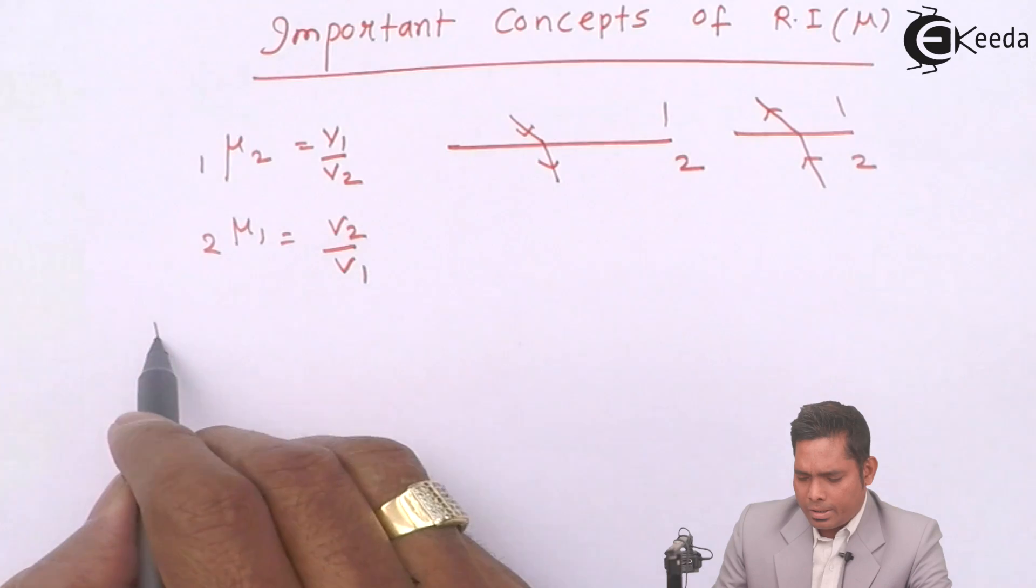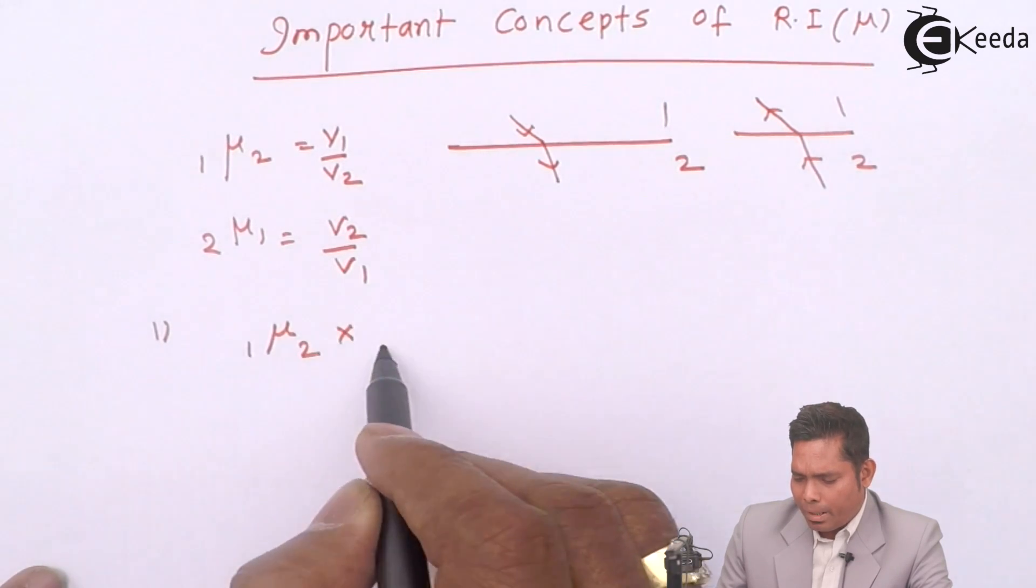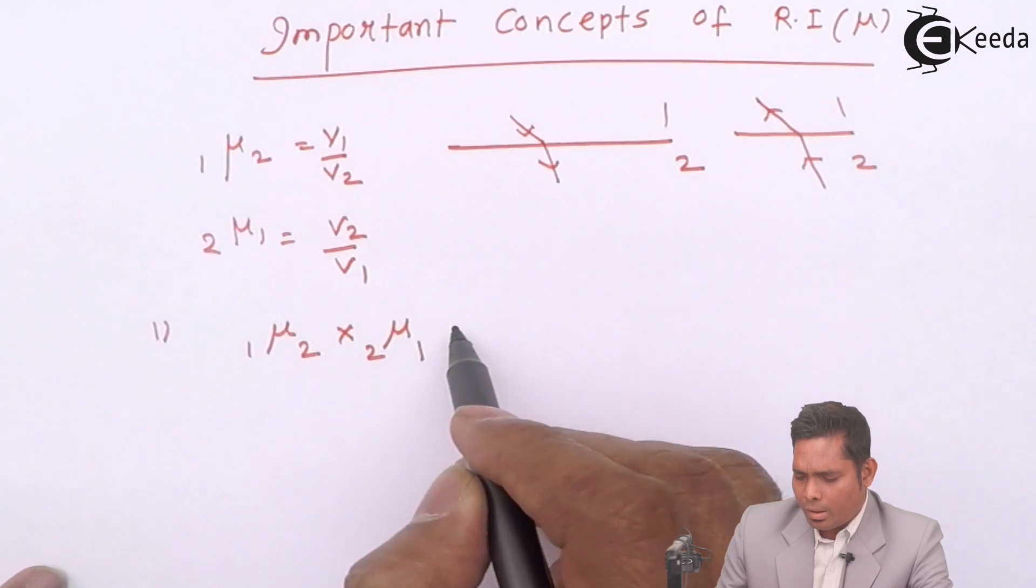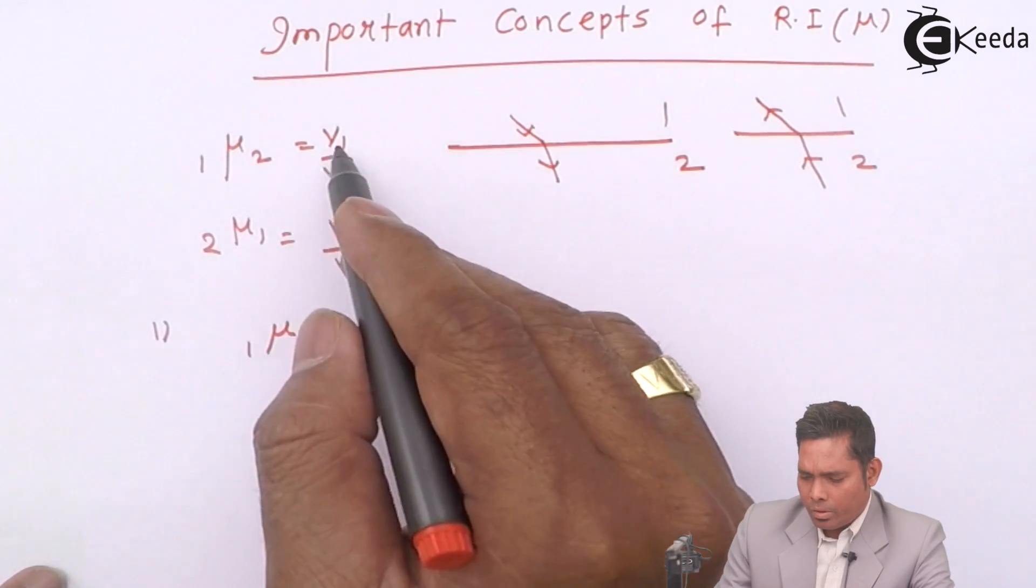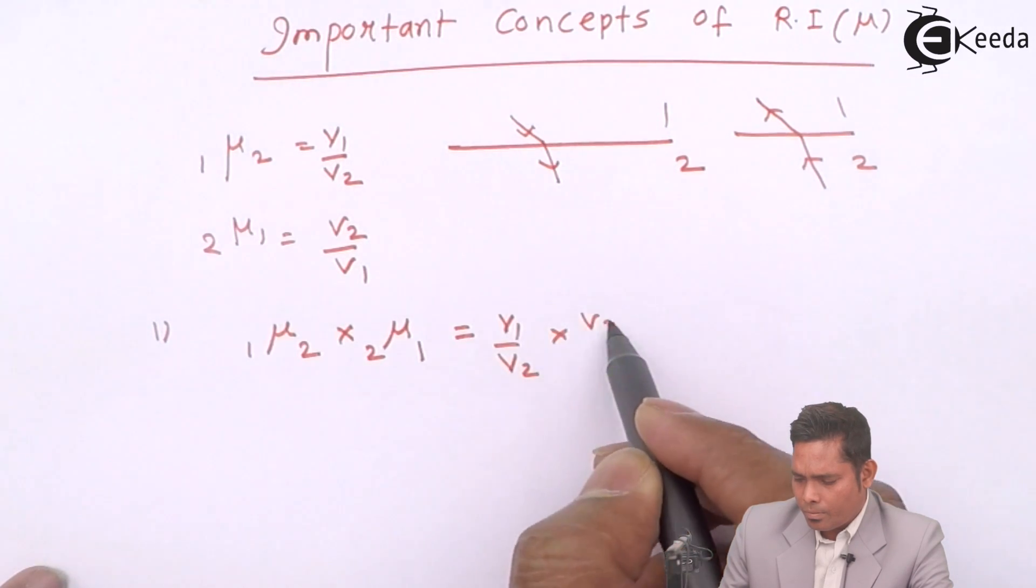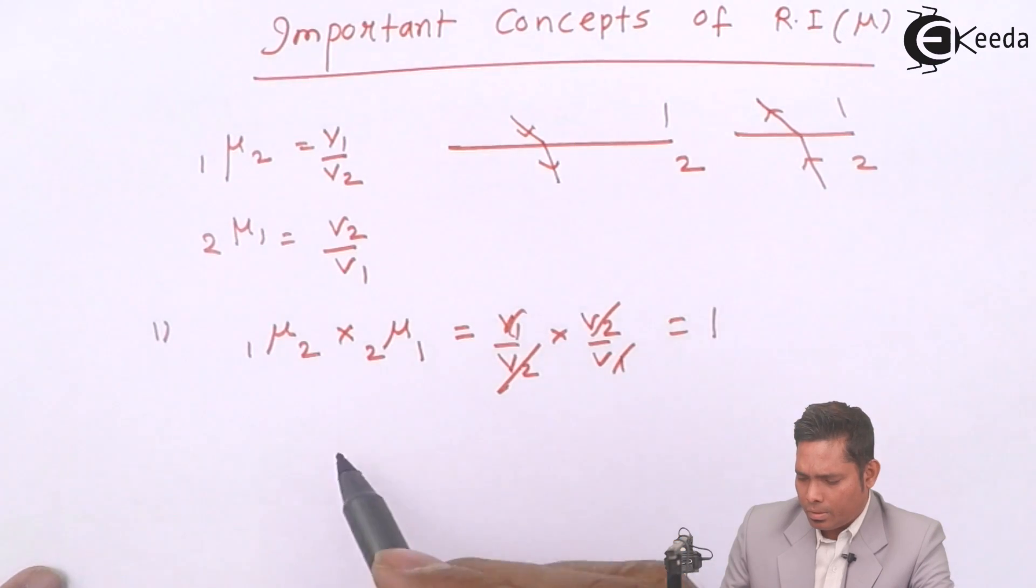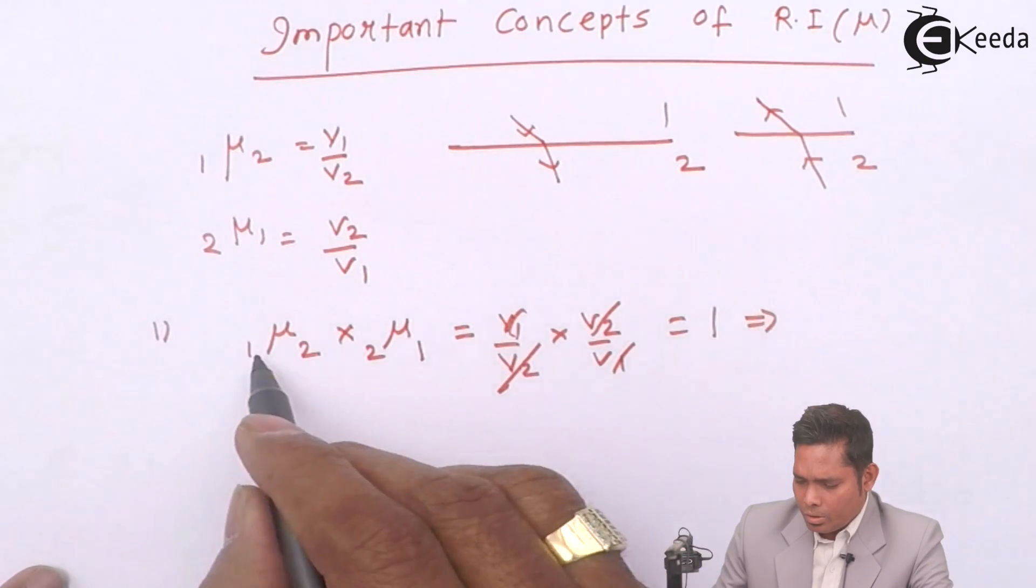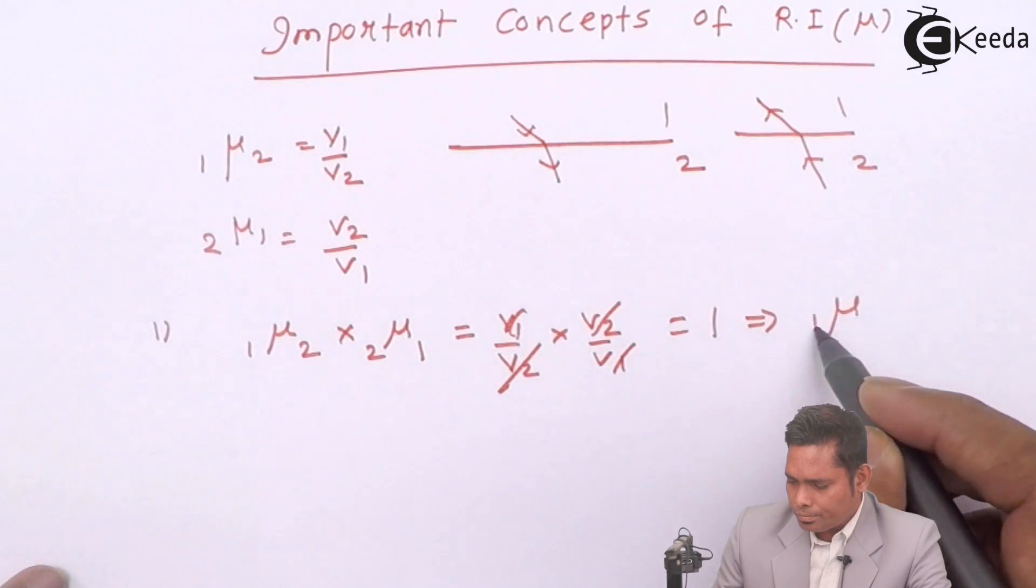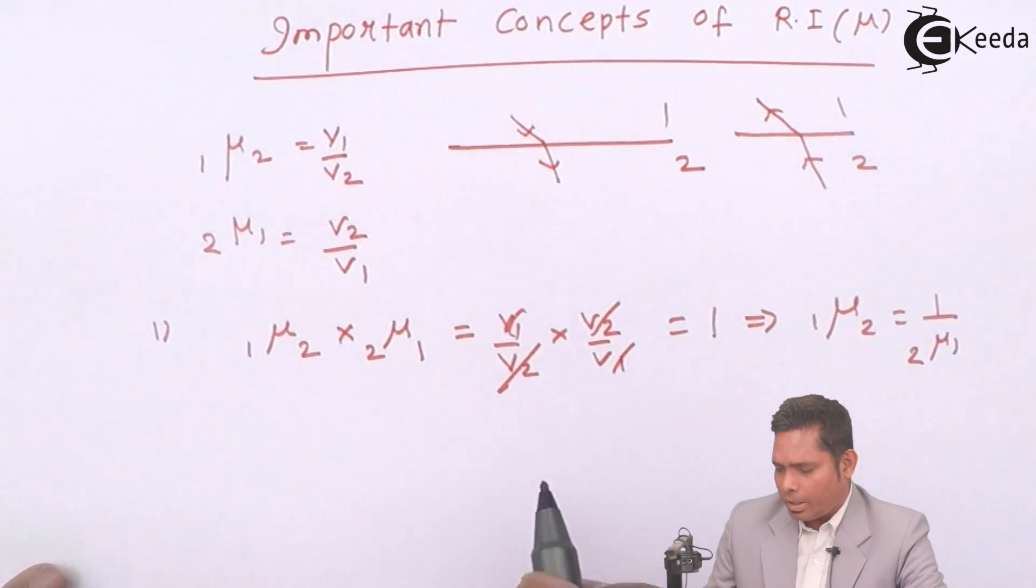First formula is, μ₁₂, if I multiply with μ₂₁, I will get, you can see here, multiply this. And this cancels out and becomes 1. So this implies that these two are reciprocals.